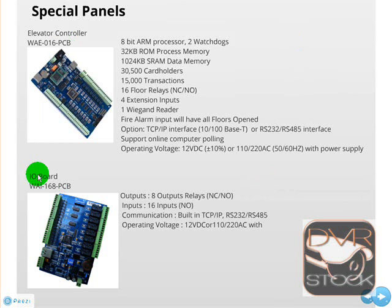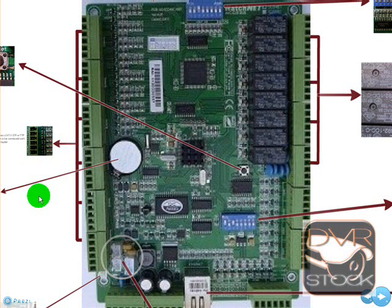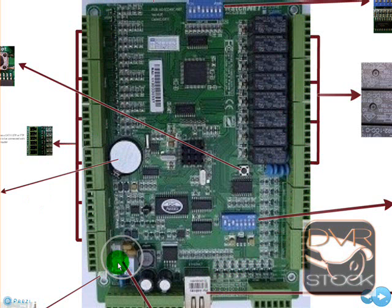On the IO board we have eight inputs and 16 outputs, also IP-based. Now let's go into a little more detail on the panel. As you can see, on one side are the reader connections, on the other side the lock connections, sensor connections, and buttons. Here we see the TCP/IP, RS-485, and RS-232 connections, reset button, and so on.